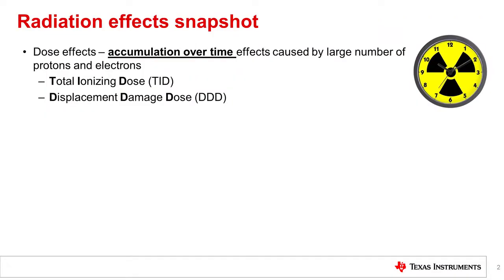When you think about radiation, there are different exposure dependencies. The first is time-dependent and is referred to as dose effects — the longer a system is exposed, the higher accumulation of radiation that system will see. This accumulation is represented by two terms: total ionizing dose and displacement damage dose.